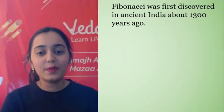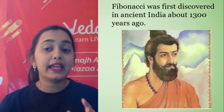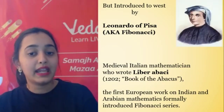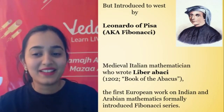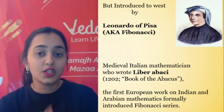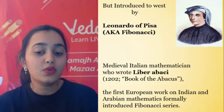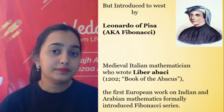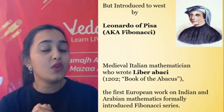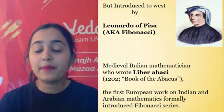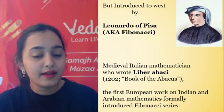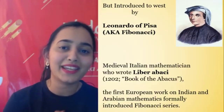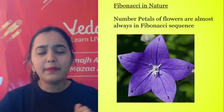The Fibonacci sequence was first discovered by ancient Indian monks about 1,300 years ago, but it was introduced to the West by Leonardo of Pisa, also known as Fibonacci. He was an Italian mathematician who wrote a book called Liber Abaci. In that book, he revealed the Fibonacci series and showed it appears in nature. He also gave us Arabian mathematics numerals — without which we would still be counting in Roman numerals today.